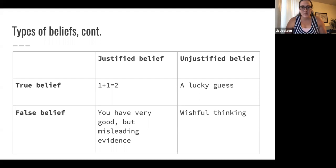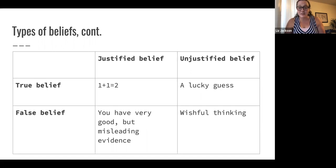False beliefs can actually be justified. Sometimes you have really good evidence for something, but it's actually misleading. For example, if your favorite sports team is doing really well and they're going to play a really bad team, you might believe before the game they're going to win — that's a justified belief. But if there's a total upset and they actually end up losing, that would be a justified false belief. You had a good basis for it, but your evidence ended up being misleading.